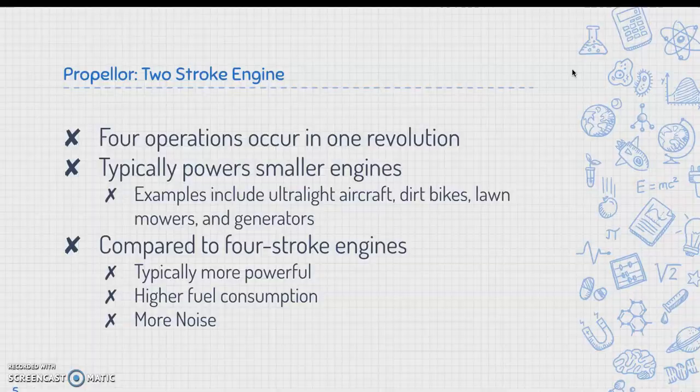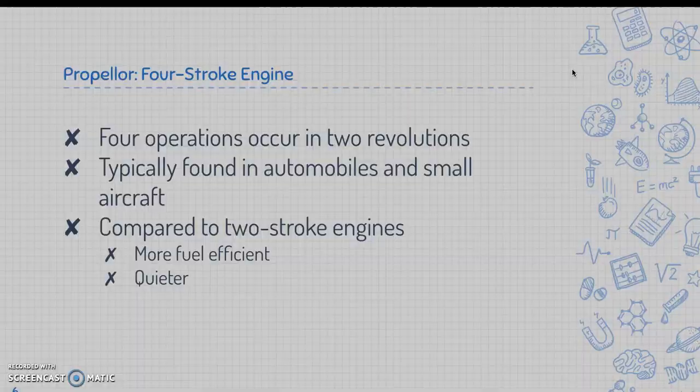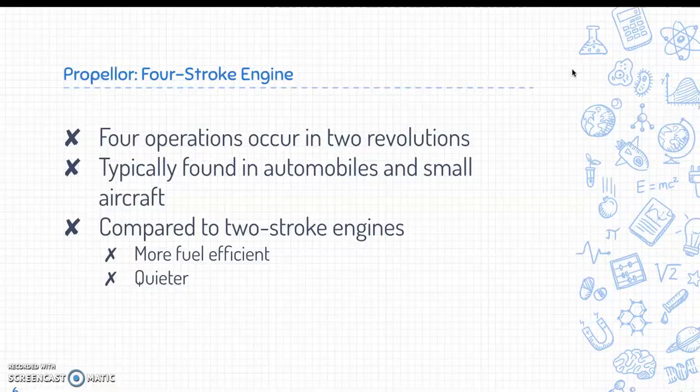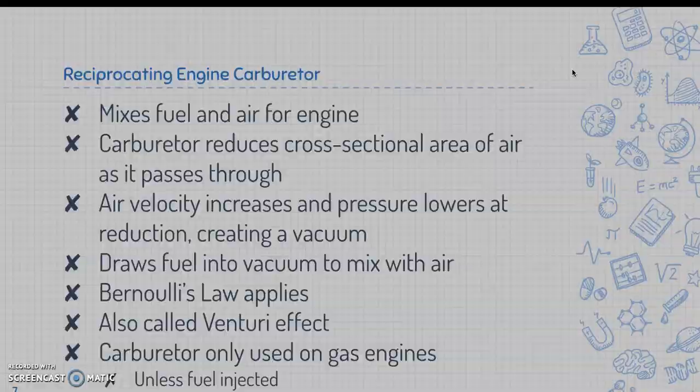In the two-stroke engine, four operations occur in one revolution. It typically powers smaller engines such as ultralight aircraft, bikes, lawnmowers, and generators. Compared to four-stroke engines, they're typically more powerful but have higher fuel consumption and are much louder. The four-stroke engine has four operations in two revolutions, is found in automobiles and small aircraft, and is more fuel efficient and quieter than two-stroke engines.